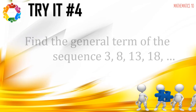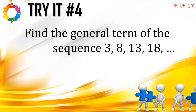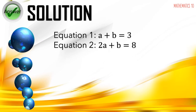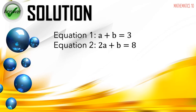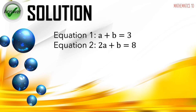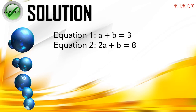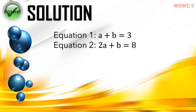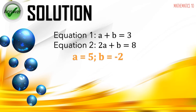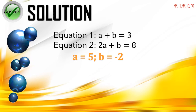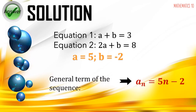Next activity: find the general term of the sequence 3, 8, 13, 18. After preparing the table and confirming the constant first difference, the equations are formed and the elimination method yields a equals 5 and b equals negative 2. Therefore, the general term is a sub n equals 5n minus 2.